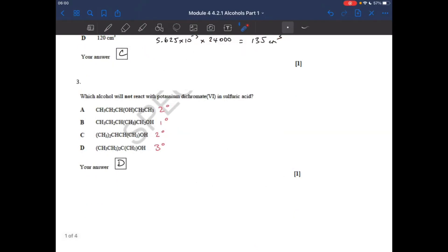Which alcohol will not react with potassium dichromate(VI) in sulphuric acid? That's obviously the oxidizing agent, so in other words, which is the tertiary alcohol, because they're not oxidized. That's a secondary one, that's a primary one, that's a secondary one, there's your tertiary one, so D.